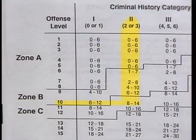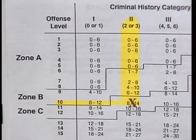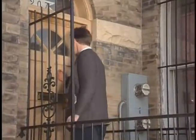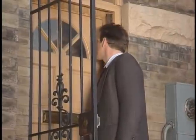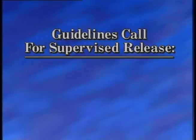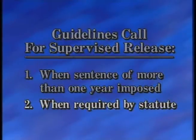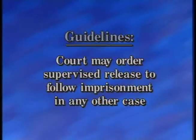The Commission, believing that even short confinement terms have a deterrent effect, imposed additional limits on probation. Where the minimum term of imprisonment specified in the sentencing table's guideline range is eight months or more, a sentence of probation is not a within-guideline option, absent a departure. The Sentencing Reform Act also includes provisions for a period of supervised release following a term of imprisonment. Supervised release is not the same as probation — it is imposed in addition to, not in lieu of, a period of imprisonment. It involves a period of post-release supervision by a probation officer that helps enforce payment of fines, restitution orders, or other court-ordered conditions. The guidelines call for the court to impose a term of supervised release to follow imprisonment when a sentence of more than one year is imposed or when required by statute.